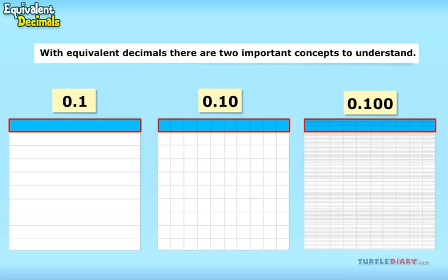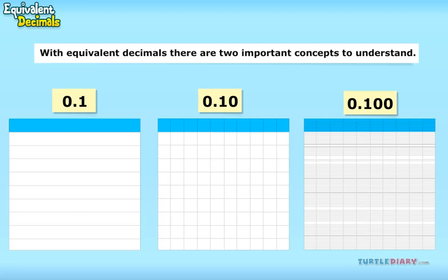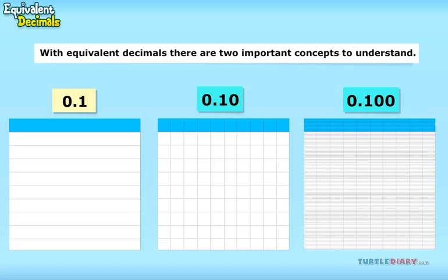That is because as we move to the right of the decimal point, each position is ten times less. The other important thing is that 0.10 and 0.100 can both be simplified to 0.1. The additional zeros to the right of the .1 are called placeholders and show the specific place value of decimal numbers.